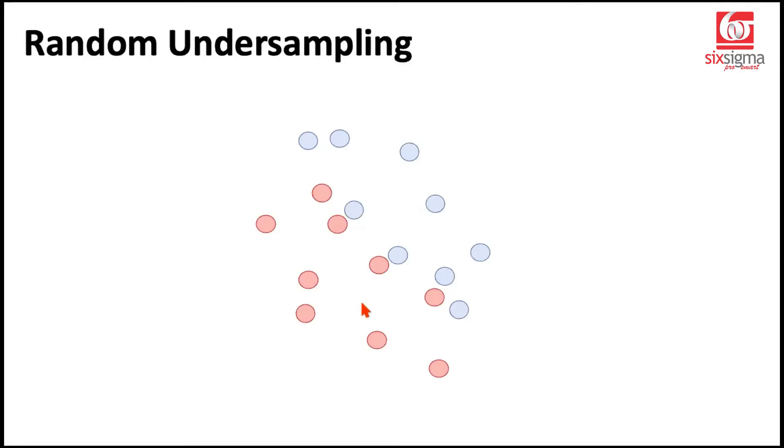This definitely addresses the problem that we're going to give equal emphasis to both the classes now. But at the same time, if you realize compared to the original scenario, we've also lost a lot of records. For this reason, maybe random undersampling like this may not be the best way to go about it.